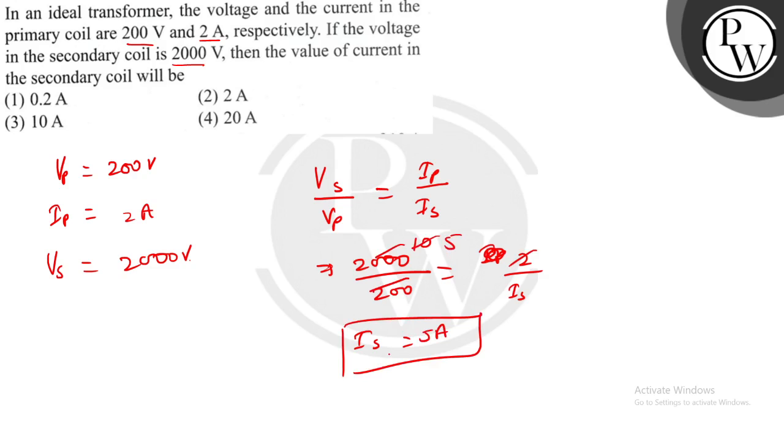Wait, I made a mistake. One by five ampere - what will it be? One by five ampere. So from here we get 0.2 ampere. So our correct answer is the first one - 0.2 ampere.